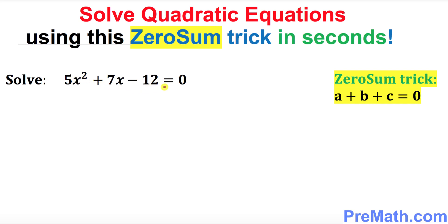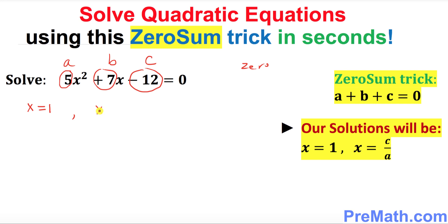We have a quadratic equation whose coefficients a is 5, b is positive 7, and c is negative 12. And if you add them up that adds up to 0. Then our solutions will be of this form. One of the solutions is going to be x equals 1 always, and the other solution is going to be x equal to c over a.